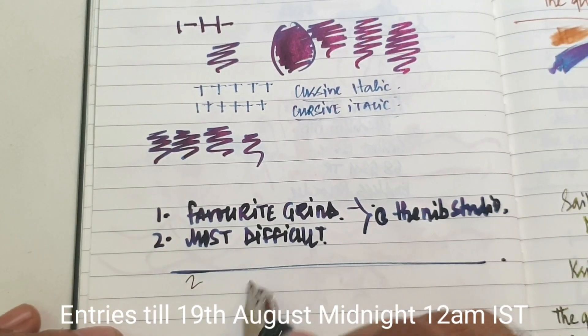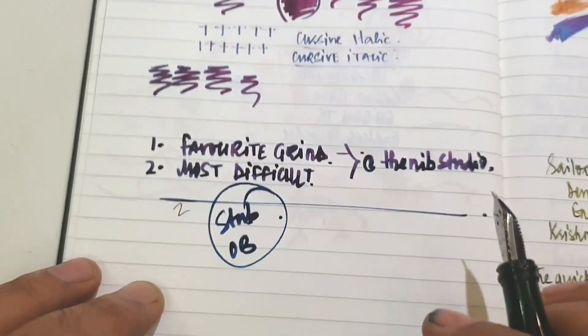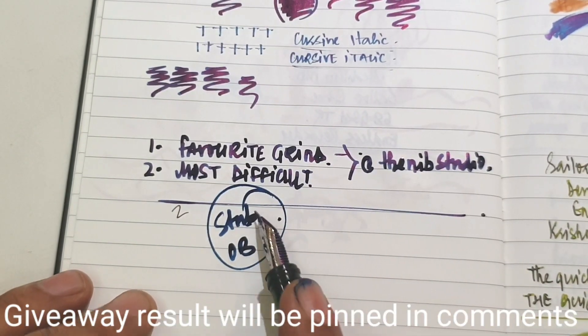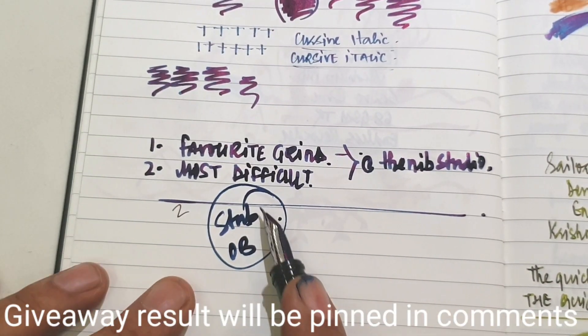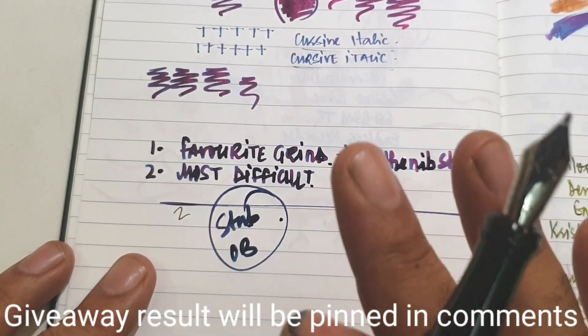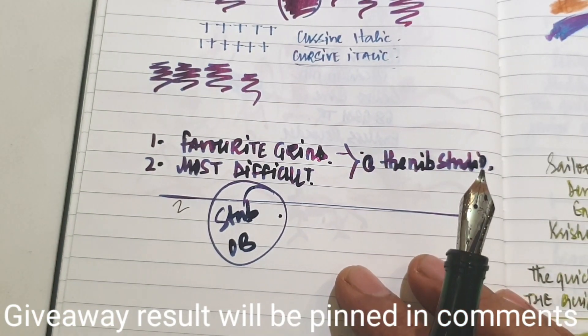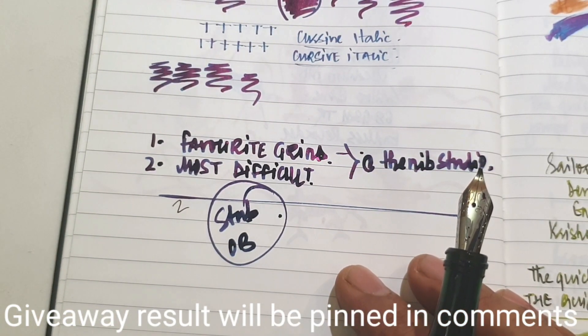Both these nibs, the stub and oblique broad, are for a single giveaway. We are not gonna give them to 2 separate persons. The one who gets this, it goes to them. There will be a small draw amongst the people who have mentioned the correct entries.